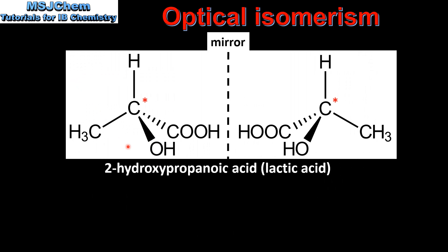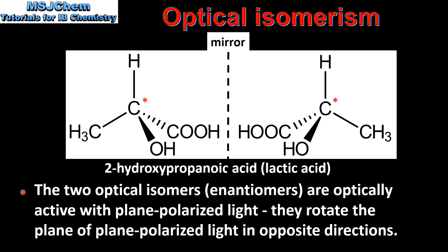Next we look at the two optical isomers of lactic acid. Just like in the previous example, the two optical isomers are drawn as mirror images of each other using the stereochemical formula. The two optical isomers are optically active with plane polarized light. This means they rotate the plane of plane polarized light in opposite directions, and we will look at this in more detail in the next video.